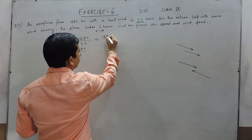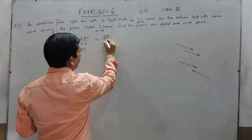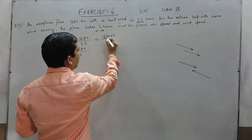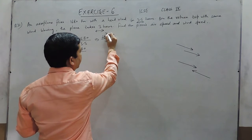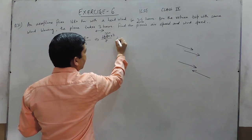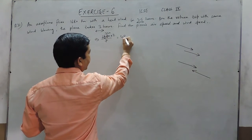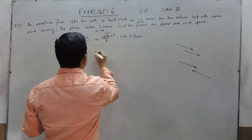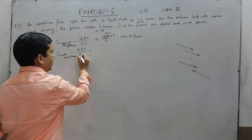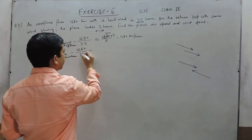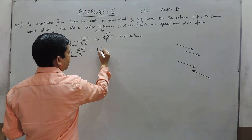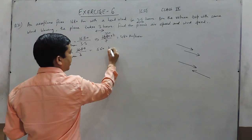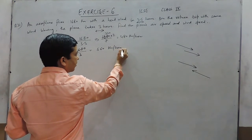So if we calculate this, it is 1680 upon 7 into 2. This comes out to be 480 km per hour. While when we calculate the other, it comes out to be 560 km per hour.